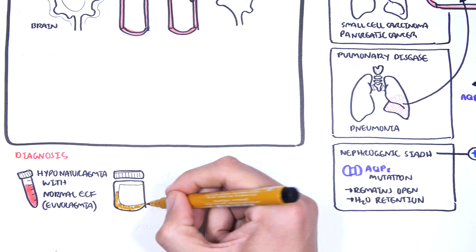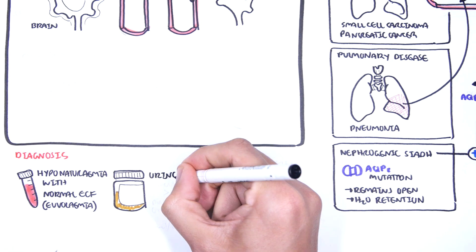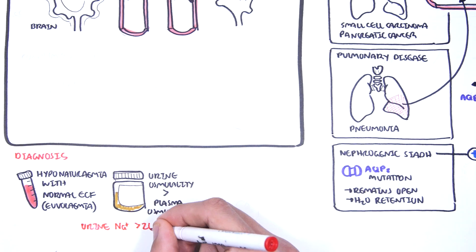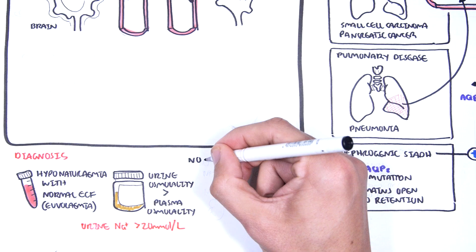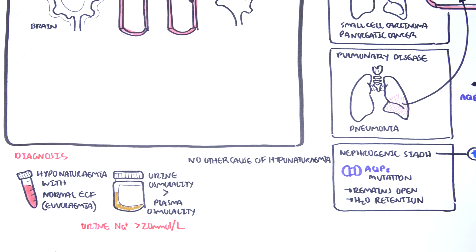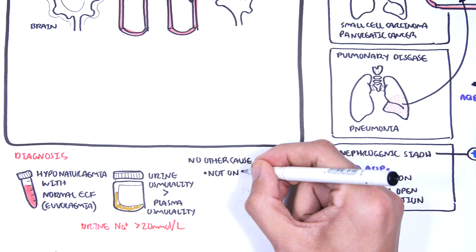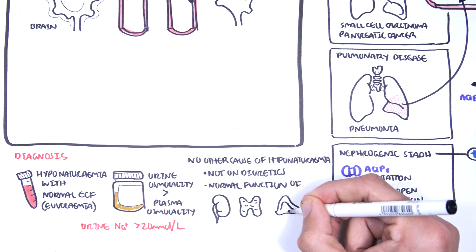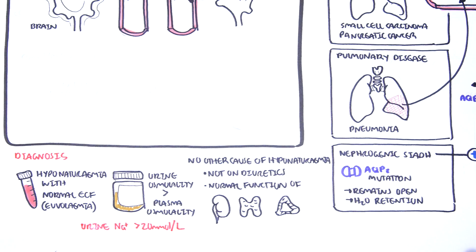Two, urine osmolality needs to be higher than plasma osmolality. The urine sodium needs to be greater than 20 millimoles per liter. And you need to rule out other causes of hyponatremia. This includes making sure the patient is not on diuretics. Patients have to have normal function of kidneys, thyroid, and adrenal glands, namely the production of cortisol.